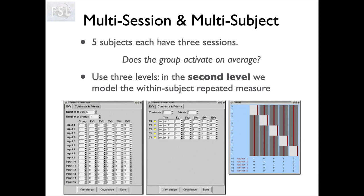That's what the design matrix looks like — you can see how it's taking the average for each of the different subjects. Then we need to set up contrasts, and they are very simple. All we are doing is putting a single contrast on each subject: contrast one has a one for EV one and zeros for the rest, contrast two has a one for EV two and zeros for the rest, etc. Each contrast tells us about the mean of one particular subject. That's all this second level is trying to do — it's just averaging the sessions for each subject.